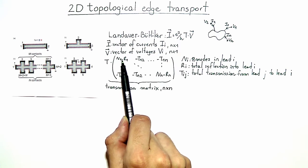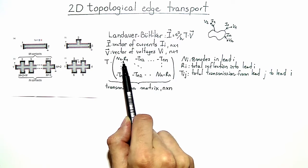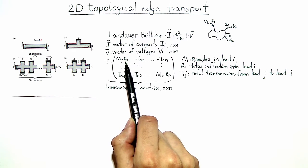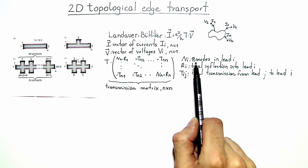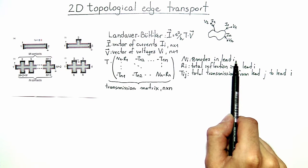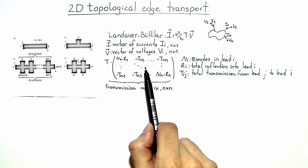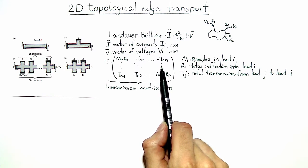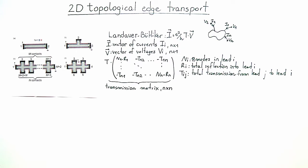Along the diagonal of the transmission matrix are N_i minus R_i terms. For example, the first entry is N_1 minus R_1 and the last entry is N_N minus R_N. The N_i values are the number of modes in lead i, and the R_i values describe the total reflection back into lead i. The off-diagonal terms are T_ij, the total transmission from lead j to lead i. Note that T_ij is not itself a probability because it implicitly contains a sum over all modes in leads i and j, so it can be a number greater than 1.